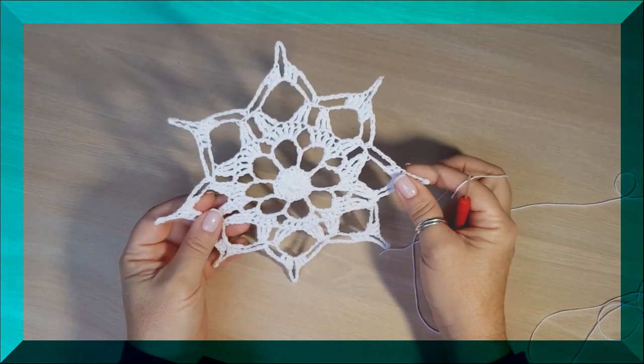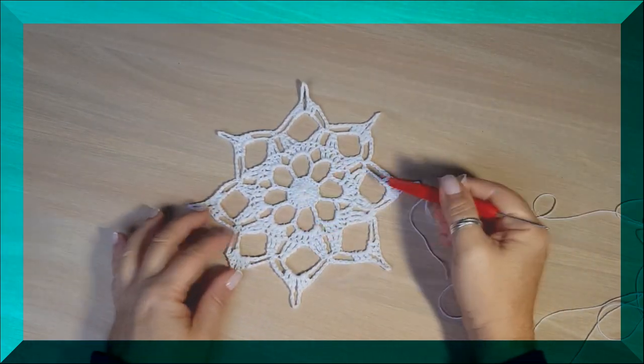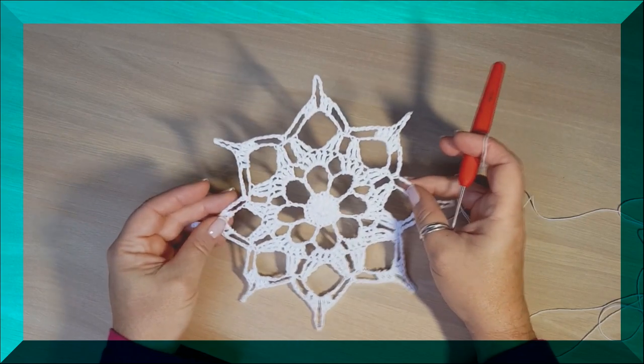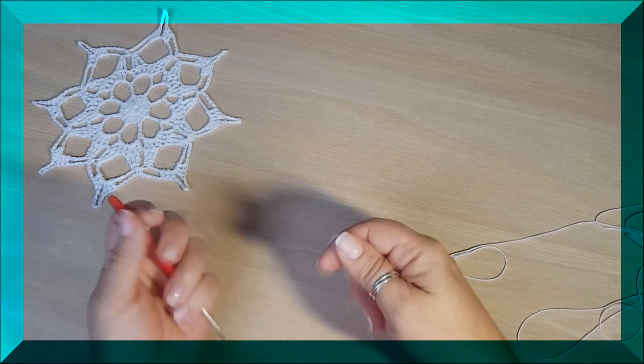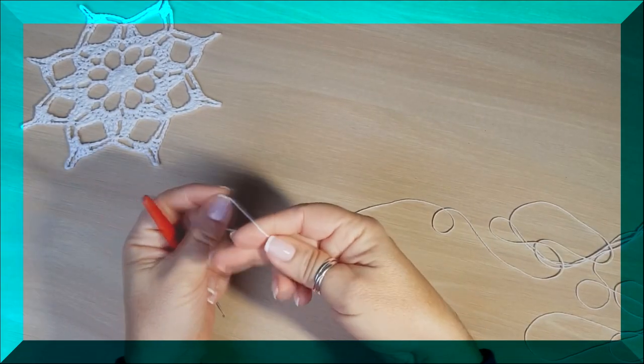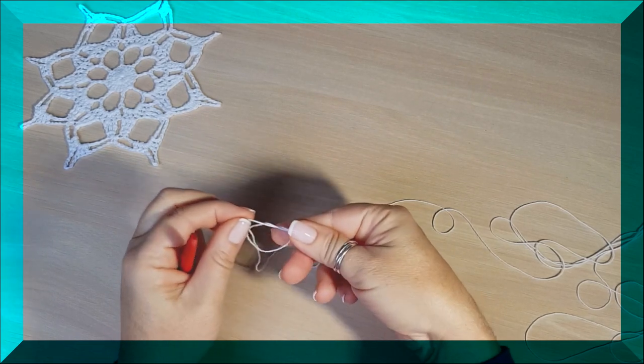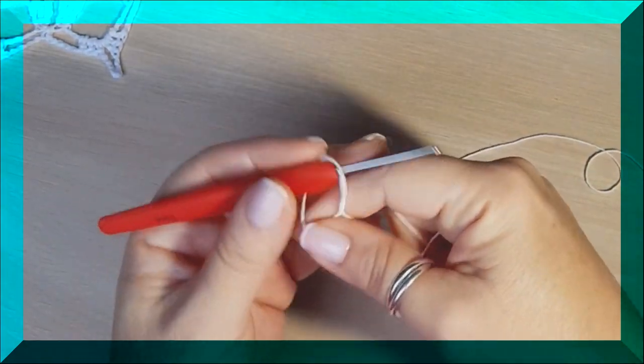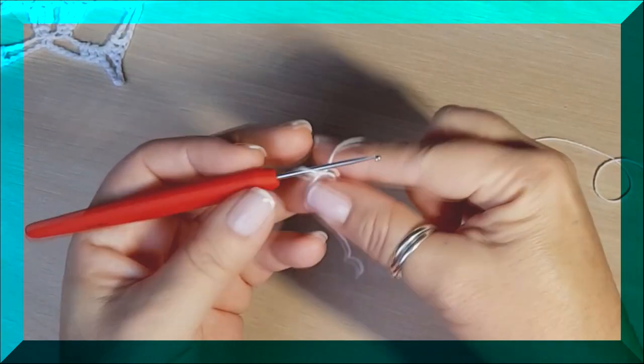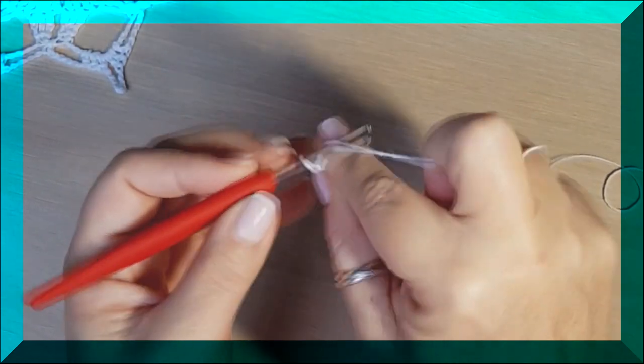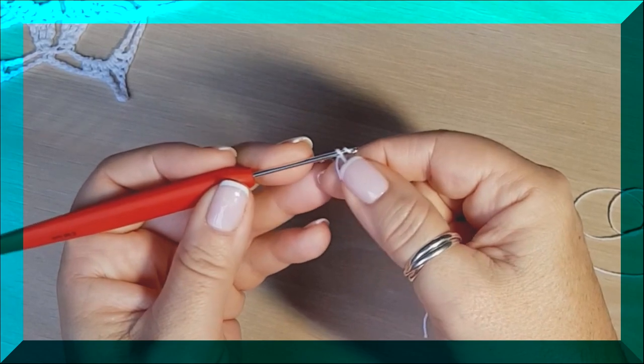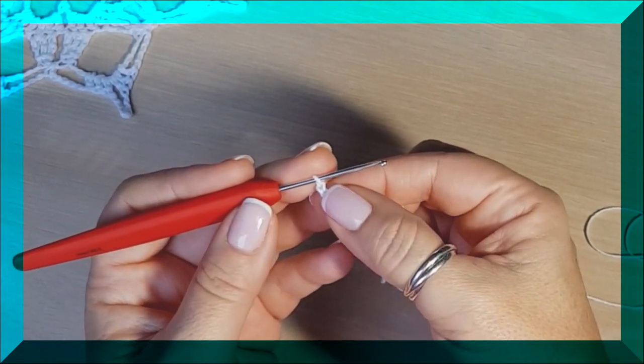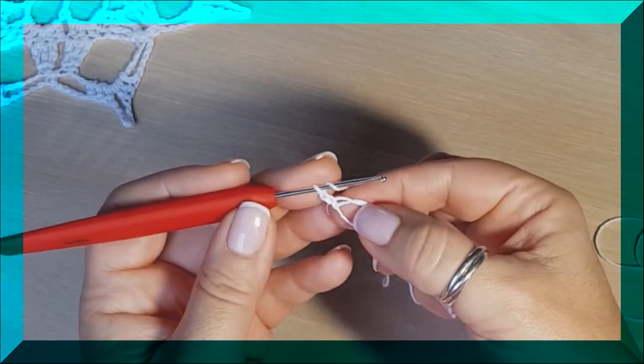Bien, vamos a hacer hoy ahora esta estrella, este mandala de 5 vueltas, que puede servir para muchas cosas. Vamos a empezar, no me enrollo ni un segundo, aro mágico, o lo que es lo mismo, nudo corredizo que no se cierra. Y ahí dentro vamos a poner, lo voy a cerrar, cuando es tan finito el hilo, yo prefiero trabajar con el más cerradito el arito. Entonces, ahí dentro vamos a empezar a poner cadenitas, tantas como 3. Y hasta 24 puntos altos, contando las 3 cadenas como el primero de los puntos.